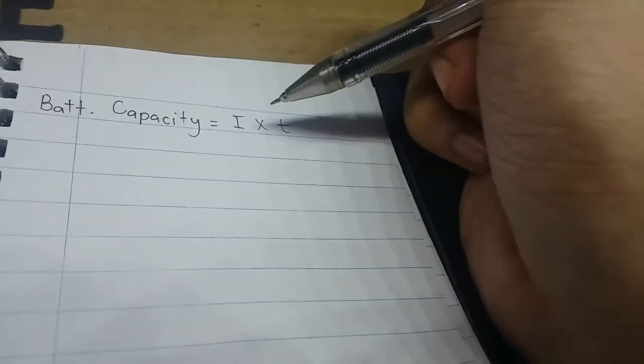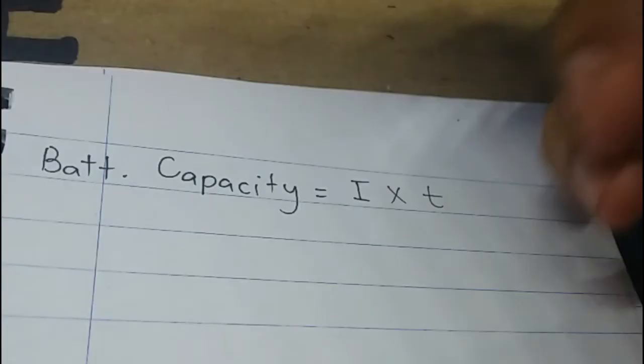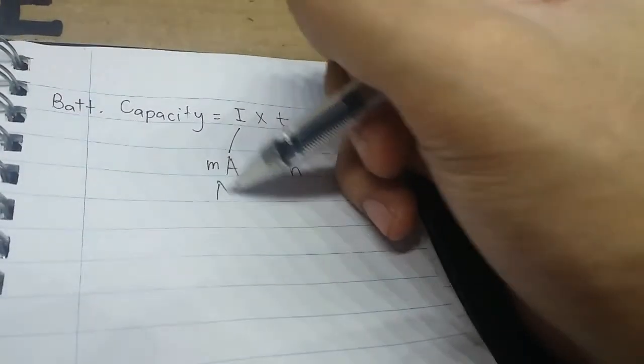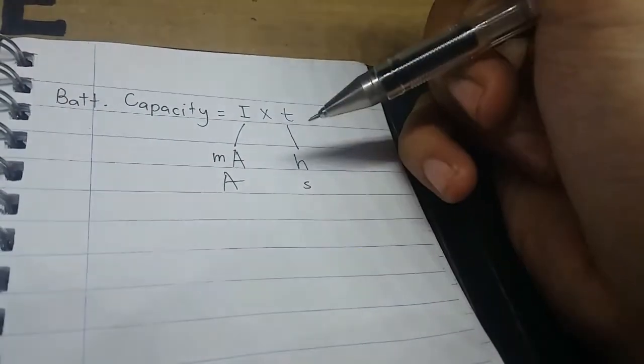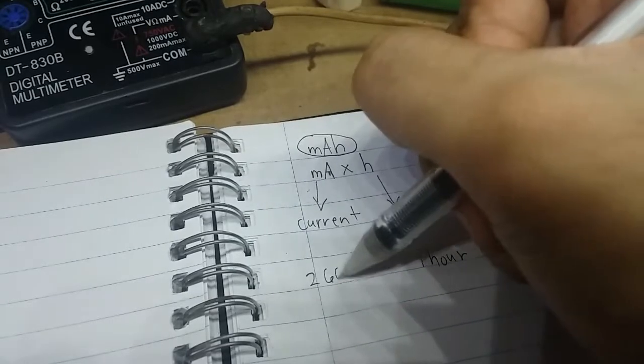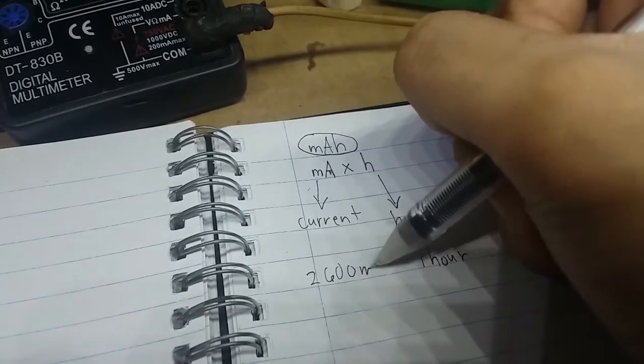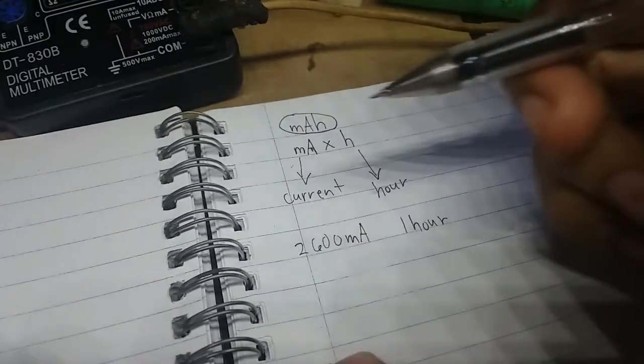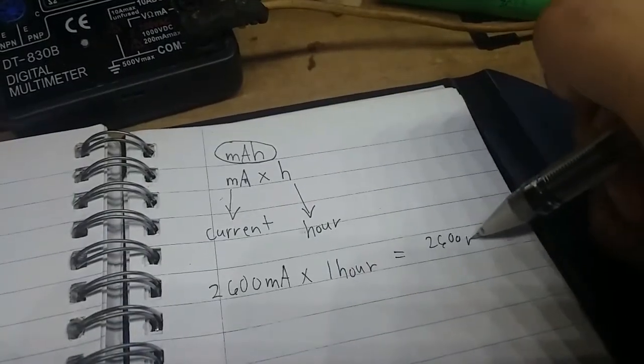First, we know that these batteries are rated in milliamp hour. Basically, this came from multiplying the current and the time. The current can be in amps and the time can be in seconds, minutes or hours. For example, you put a load on the battery and it gives 2600mAh for just one hour and it's totally dead. So it's a 2600mAh battery.